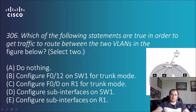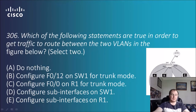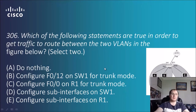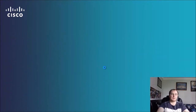Being the router on the stick, router 1 is going into the switch on port 12, so there has to be some kind of communication there. We need to incorporate option B — configure F0/12 on switch 1 for trunk mode. Then it comes down to sub-interfaces on switch 1 or router 1. Since it all generates from the router to create the VLANs, we need to create sub-interfaces on router 1. The trunk mode is needed to carry VLAN traffic between those devices. So those are the answers.